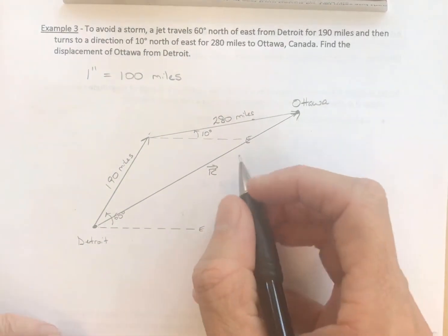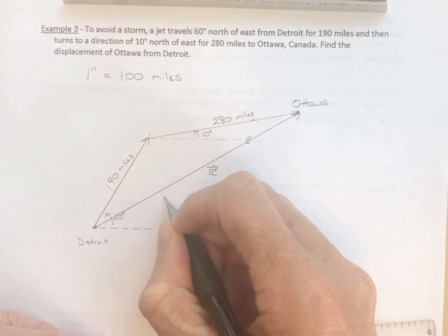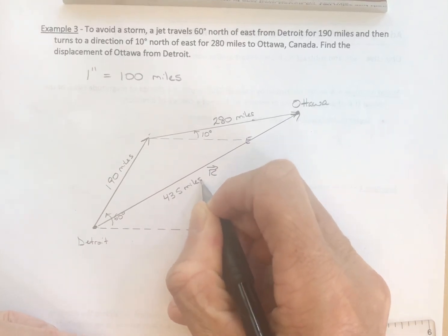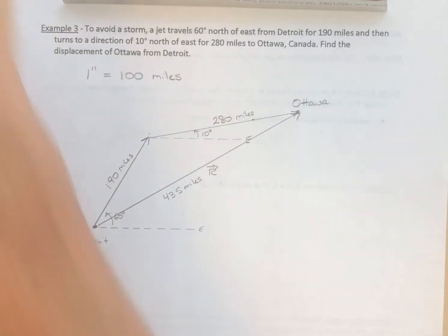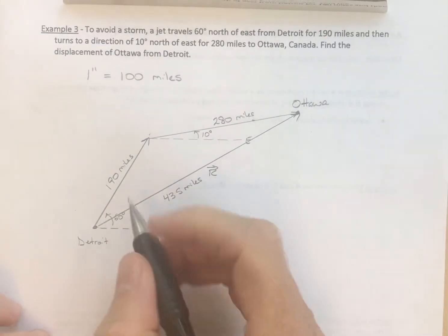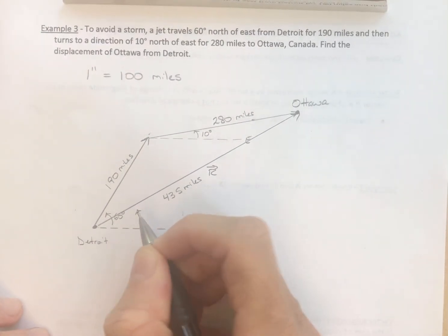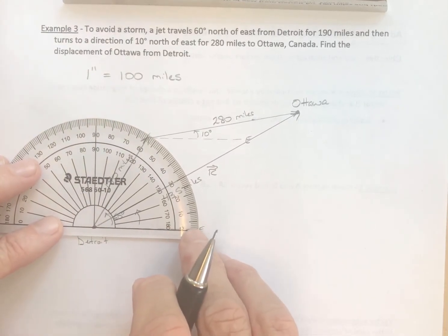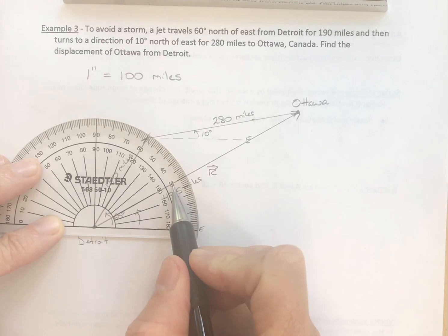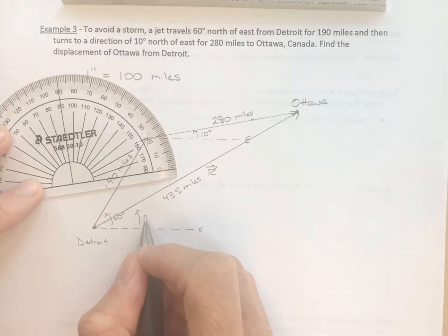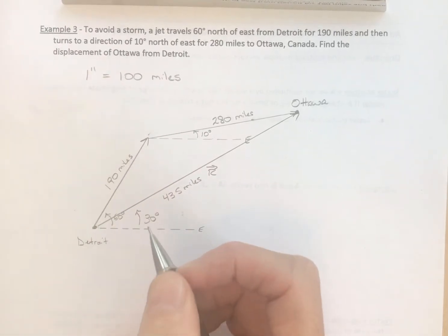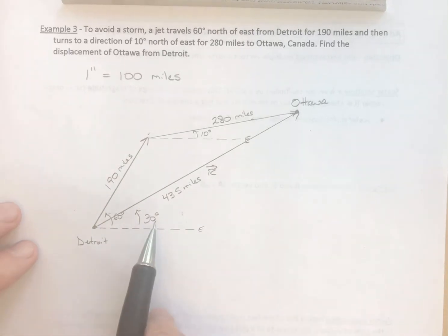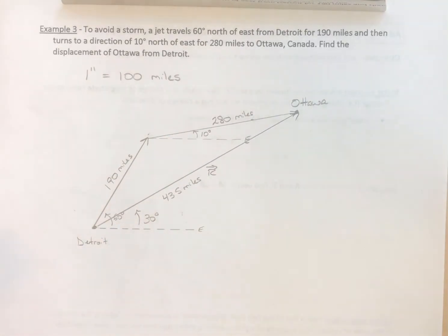So let's call it 435 miles. So we think this is around 435 miles. And we need to know what this angle is. And so we come into here. And it looks like we're right about 30 degrees. So this angle is 30 degrees. Now, again, not very precise. The angle was more precise than the distance. But we got the general idea.